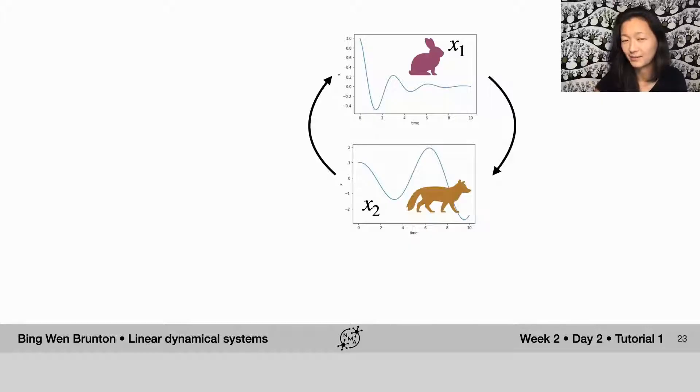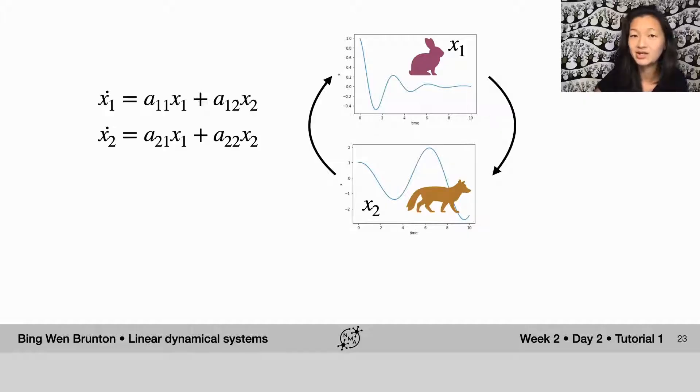We all know that foxes like eating bunnies. And so the rate at which the number of bunnies changes is not independent of the number of foxes and the same vice versa. We can write the way in which they're dependent on each other by adding a couple of terms. So now at x1 dot, the rate at which the bunnies change is not just a function of x1, but also a function of x2.